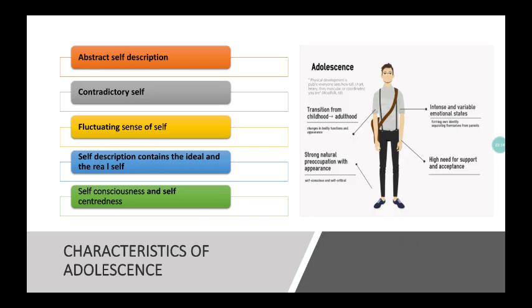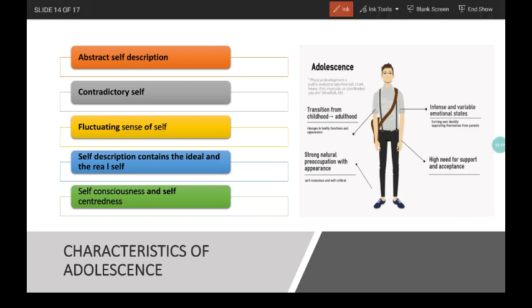Characteristics of the adolescent's sense of self. First is abstract self-description. Self-description of the adolescent becomes more abstract — instead of describing themselves in physical terms like big, tall or strong, they now emphasize the abstract or inner aspects of their personality. They may describe themselves as focused, popular, sensitive, cool, brave, etc.